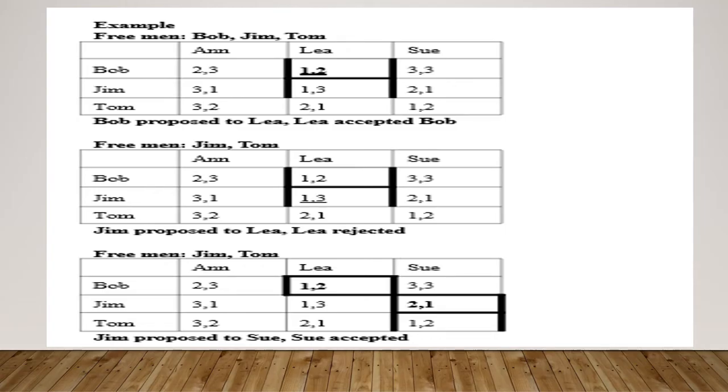And then later on, Jim is found to be having the first preference for Lee, so he is also proposing to Lee. So what happens? Lee rejected Jim because in her ranking matrix, when compared to Bob, Bob is having the higher preference, so she is rejecting it.